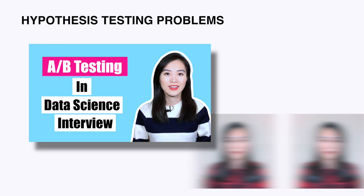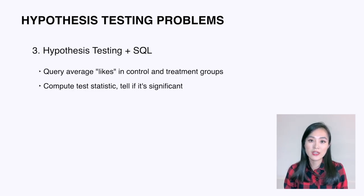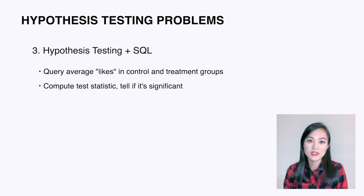The last type of questions is using a SQL query to calculate metrics and test statistics. For example, given a table containing user behavior data, write a SQL query to get the average number of likes in control and treatment groups, then obtain the test statistic and tell if it's significant or not.